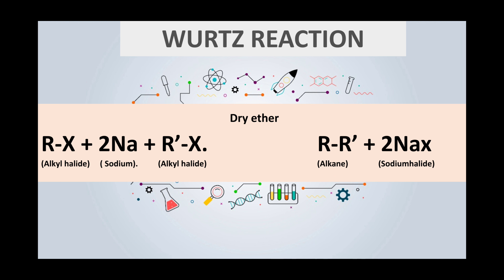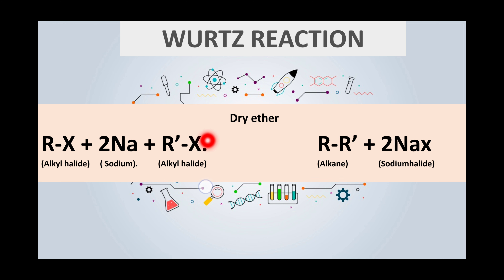The next keyword is Nana. Nana means two sodium atoms — this is two sodium atoms. The next keyword is xylophone. Xylophone means halide, that is X. X is the xylophone, that means halide. So that means we have two alkyl halide groups — two alkyl halide molecules and two sodium atoms.